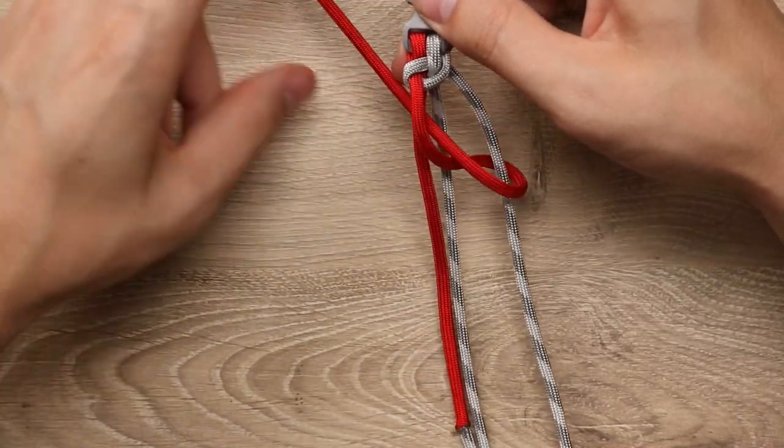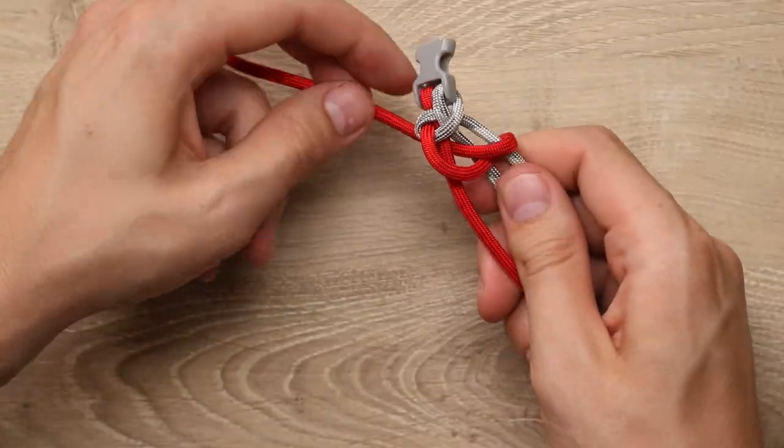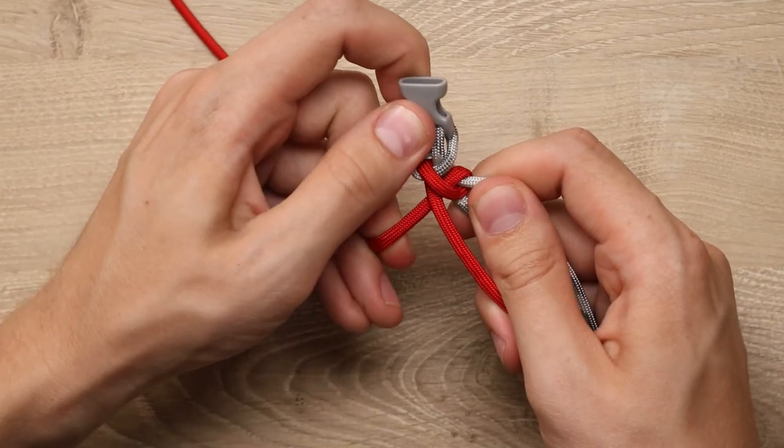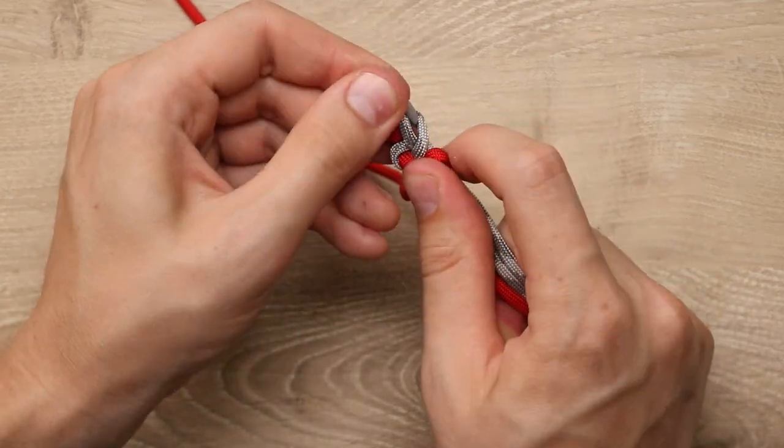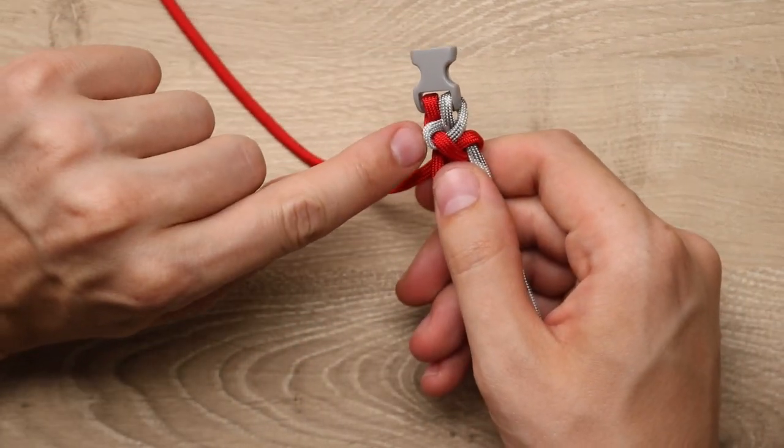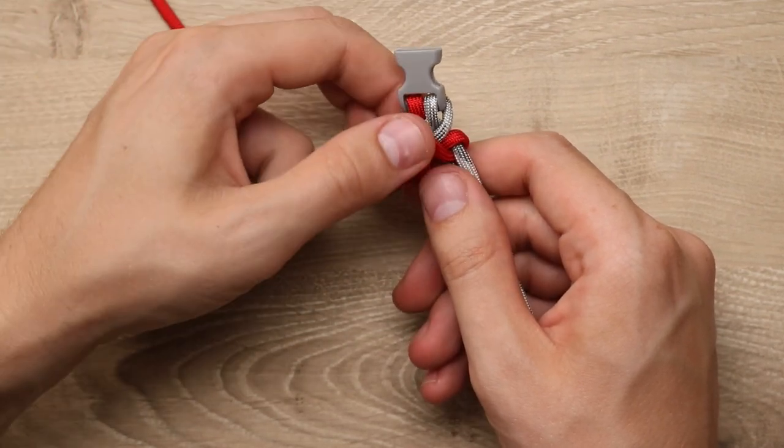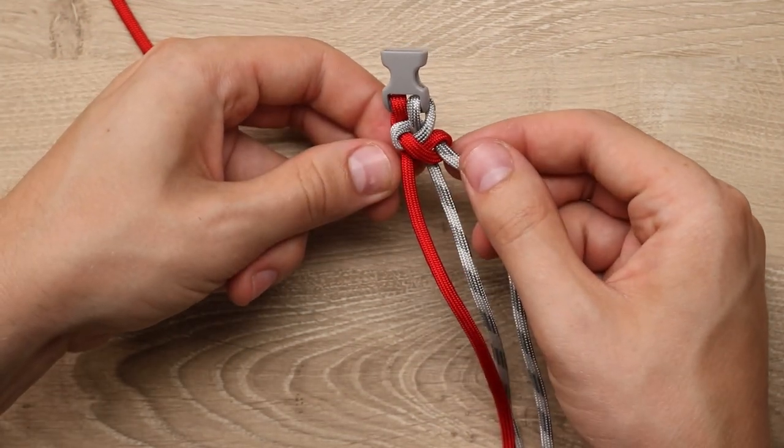And then I'm going to grab the end of our red and go down through the middle of our cord. Pull all the extra slack through, and this time we want to keep our grayscale straight as we tighten down that red side. So once we're done, we should have a loop of gray up here, almost laying flat, and then this loop of red on this side, almost laying flat.